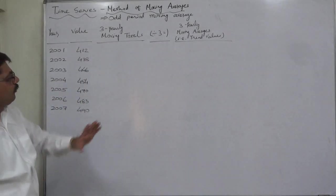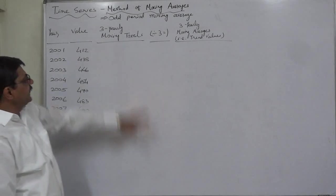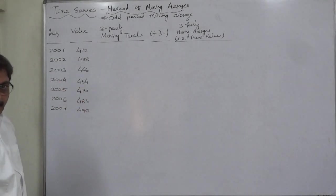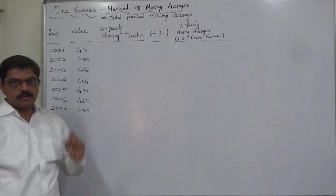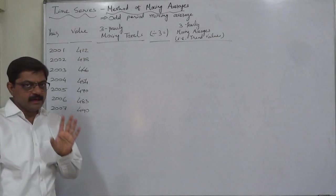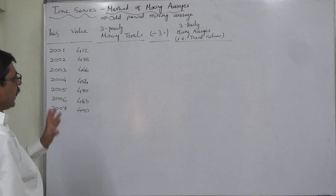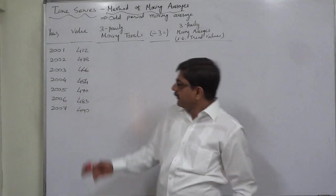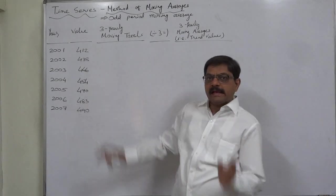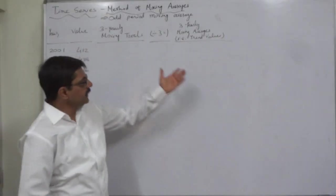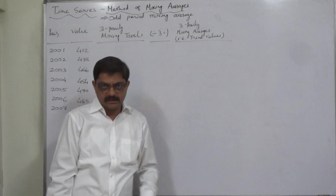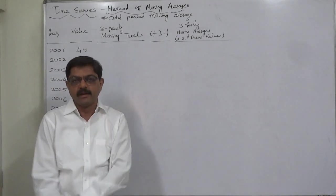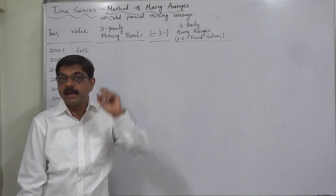So three years or three period. We know how to find out the average: sigma x over n. These are x values, n is three because we need to find out the three yearly averages. So total of three years divided by three will be the average.